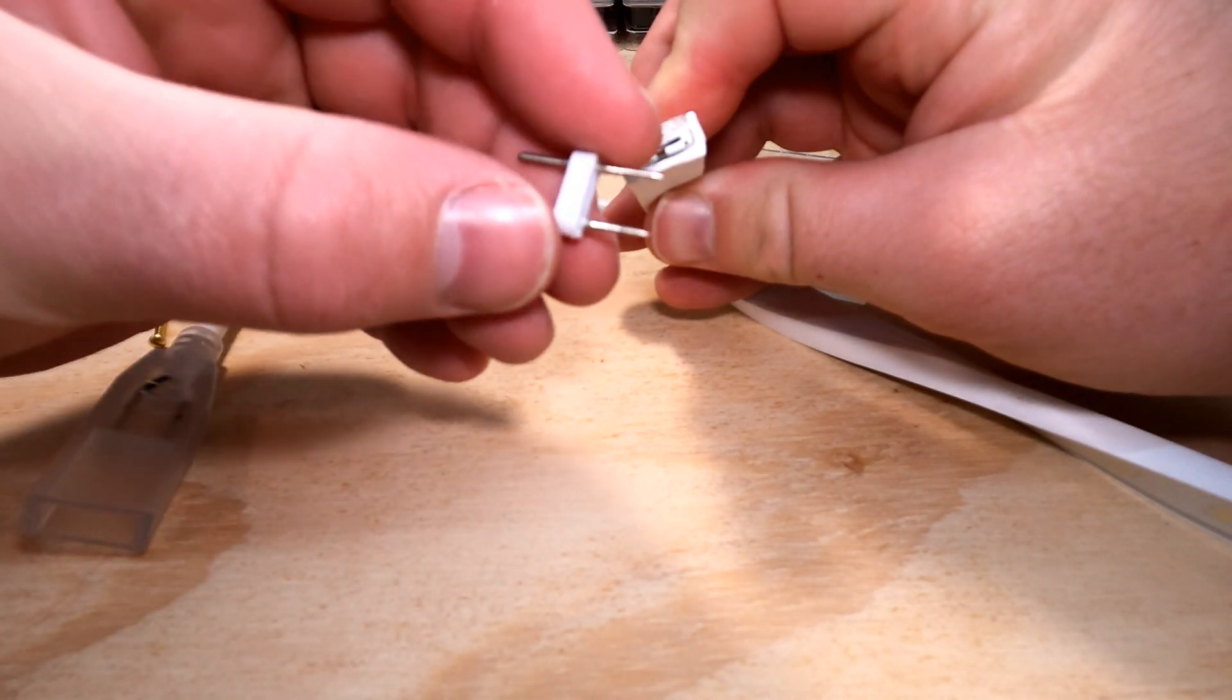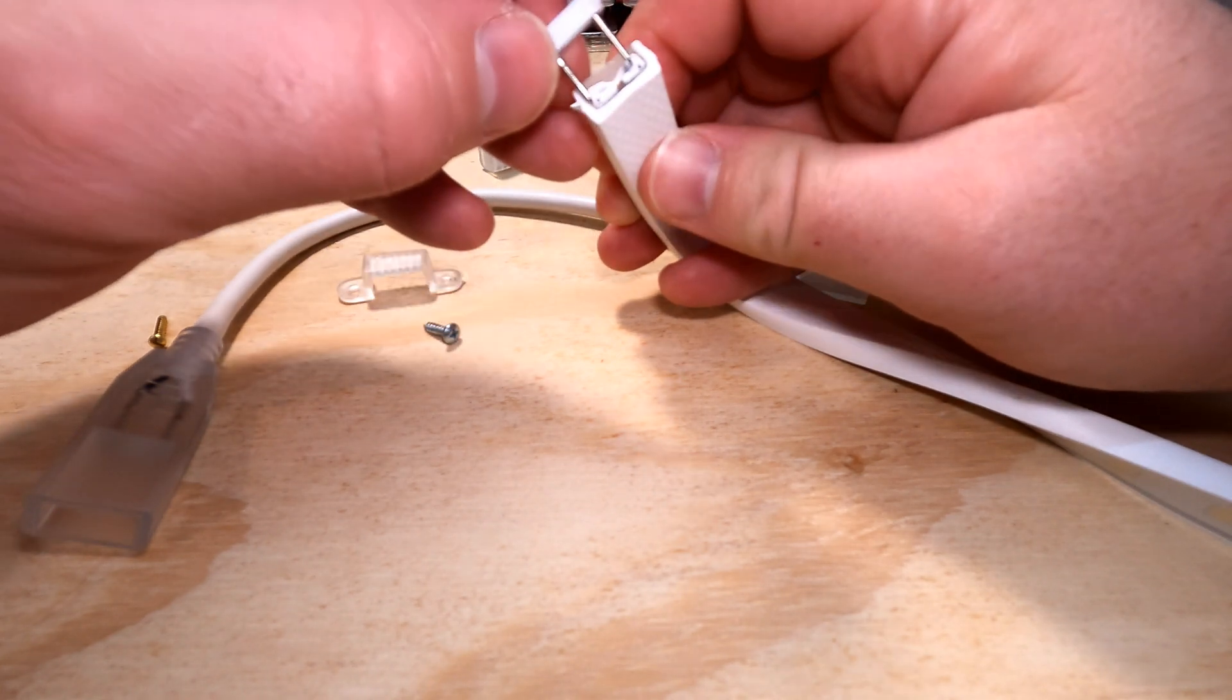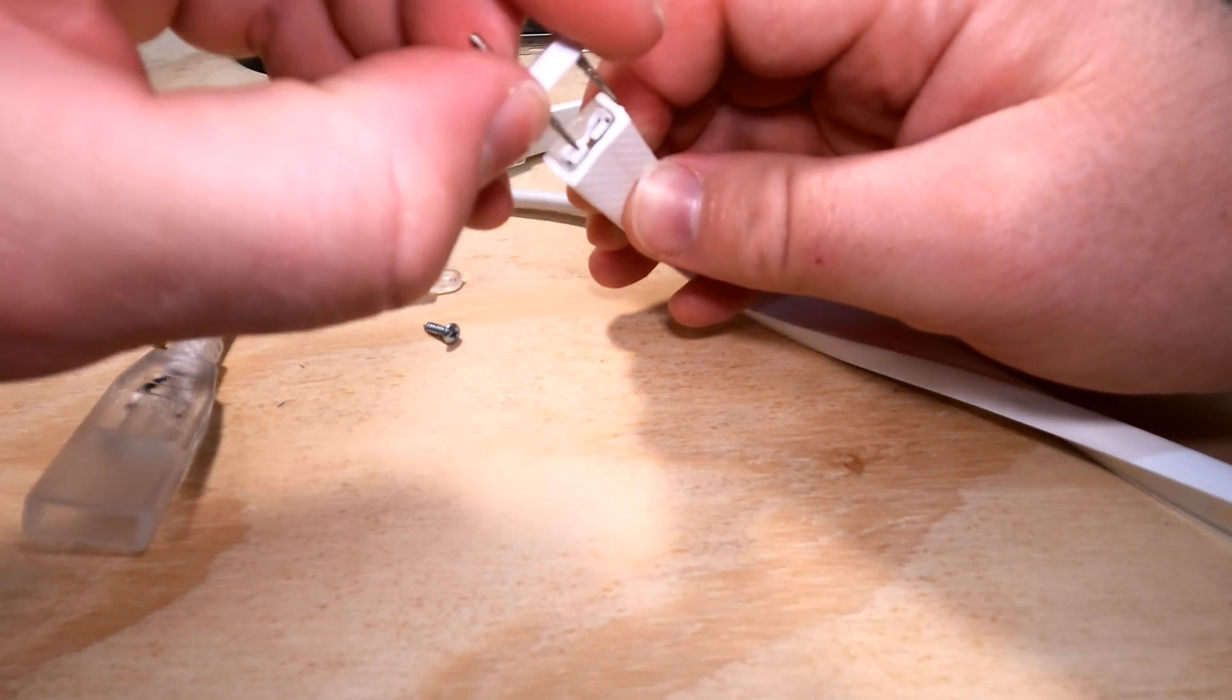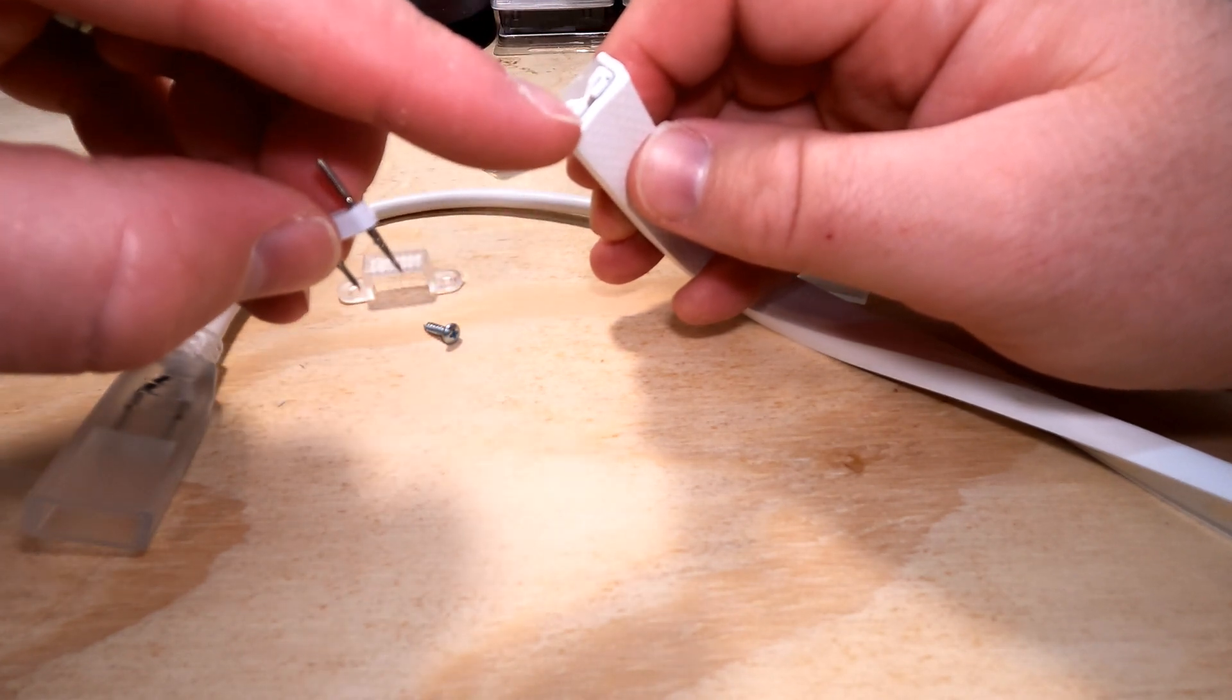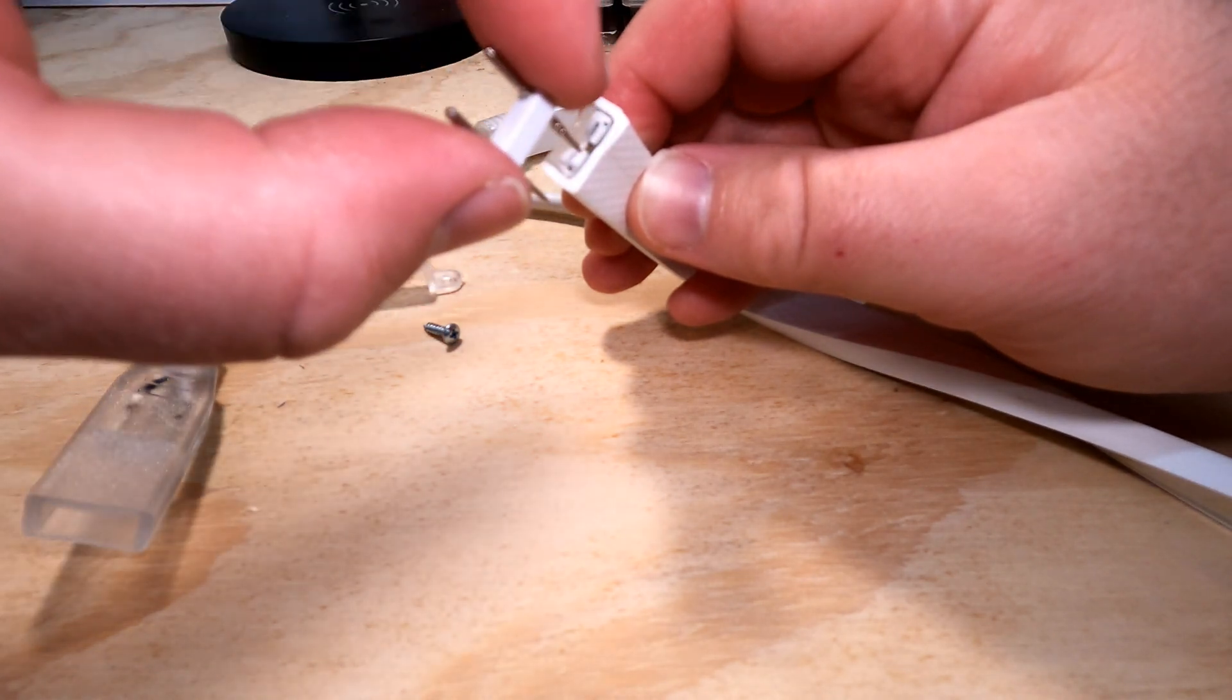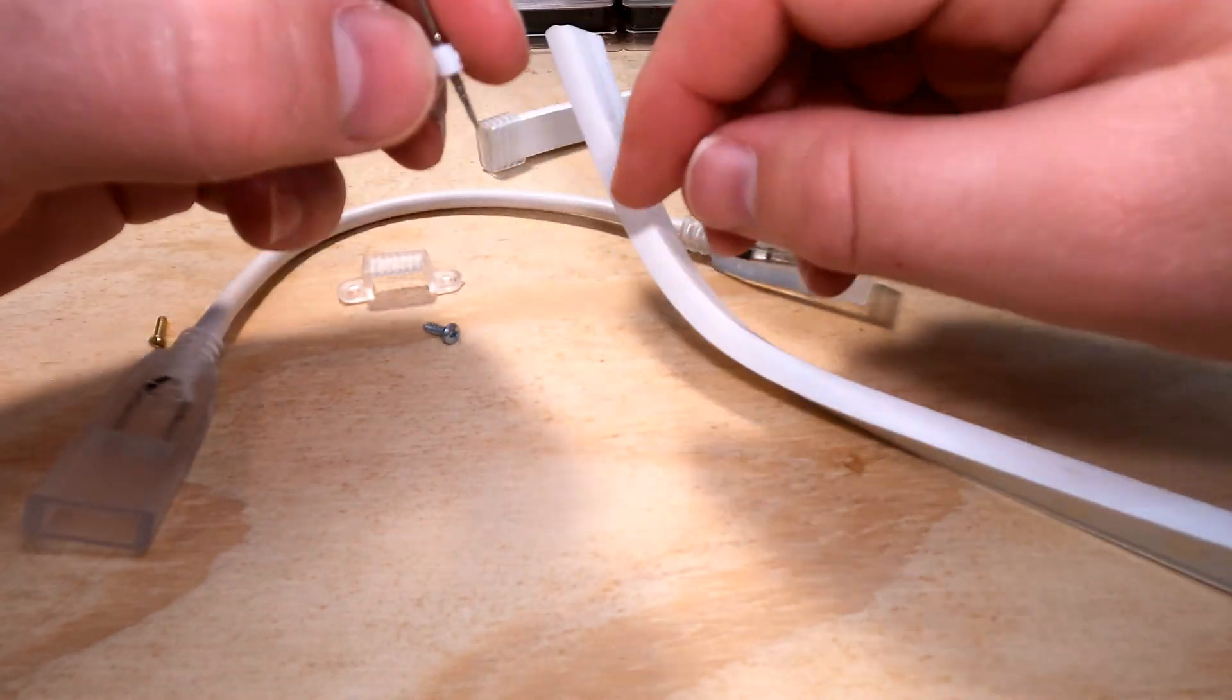And so what will end up happening is one end is kind of flat and it has barbs. And so you would line it up with, I'm not going to put it on, but you would line it up with those two holes, you push it in square. And basically what you're doing is this is the wiring that is running through and actually powering each of the LEDs. And so you're kind of piercing that wiring with the barb pieces that will then hold it in place.